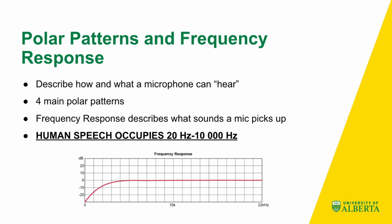A frequency response is just describing the actual sounds that a mic can pick up. We measure sound in something called hertz. Human speech occurs between 20 hertz and 10,000 hertz for the most part. The human ear, however, can actually hear around 20 hertz all the way up to 22,000 hertz. We generally like to record such that we can capture everything the human ear can hear, even if the speech sounds that linguists are mostly interested in occupy only 20 to 10,000 hertz.